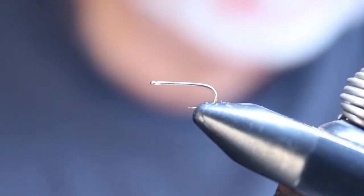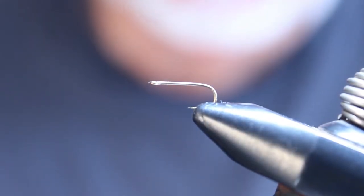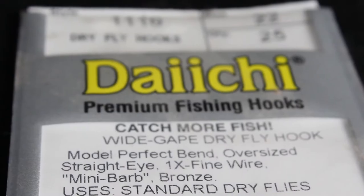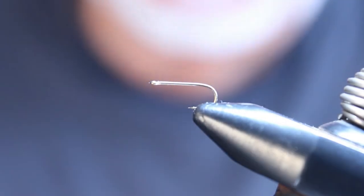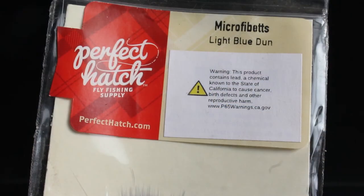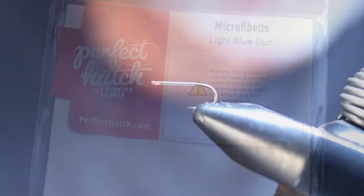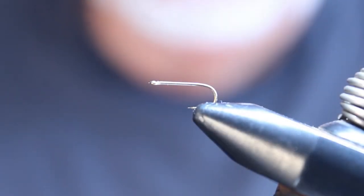The hook we're using is a straight eye dry fly hook. All major manufacturers make one, for example TMC 101. We'll be using barbits for the tail, and the thorax is going to be olive dubbing.